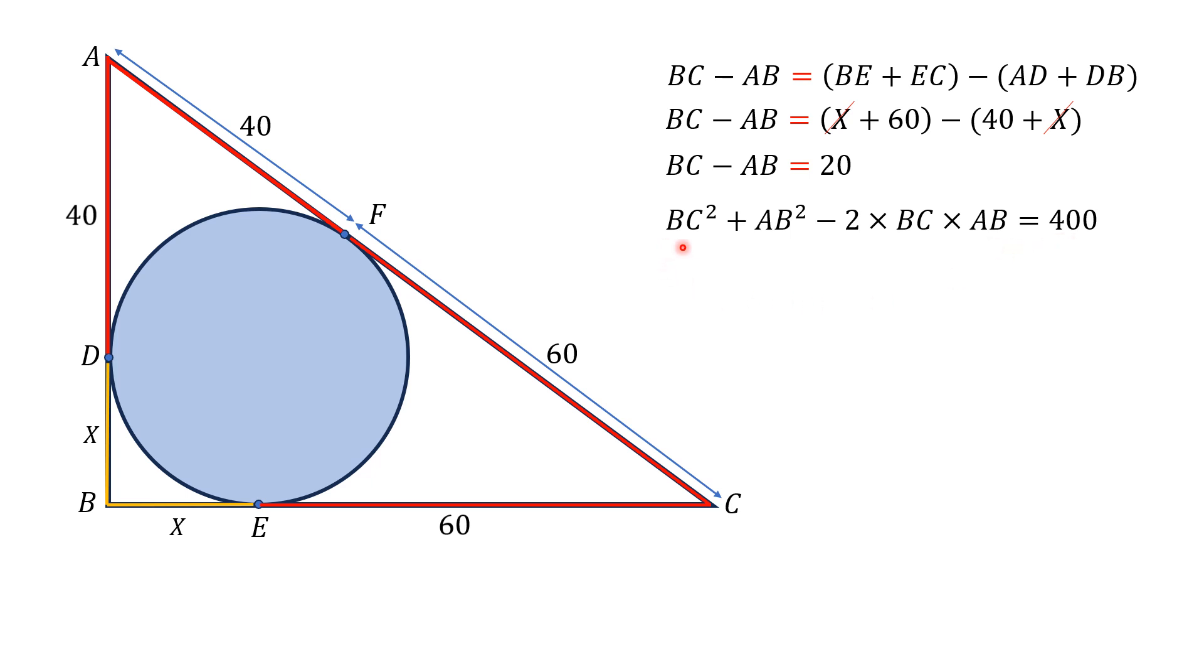Now, I am interested to find the value of BC² plus AB². By Pythagorean theorem, AB² plus BC² equals the square of hypotenuse, which is AC². Since AC is 40 plus 60, that is 100 units, so 100² is 10,000.